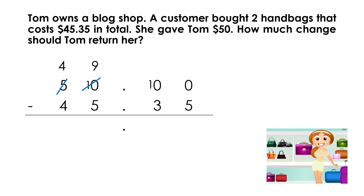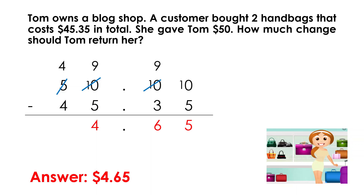Next, we need to borrow from the $0.10 position by putting a slash. Now, we write 9 as the remaining $0.10 value and one $0.10 is carried forward to the $0.01 position. Now, we can do the subtraction. 10 minus 5 is 5. 9 minus 3 is 6. And 9 dollars minus 5 dollars is 4 dollars. Finally, 4 tens minus 4 tens equals 0. The final answer is $4.65.